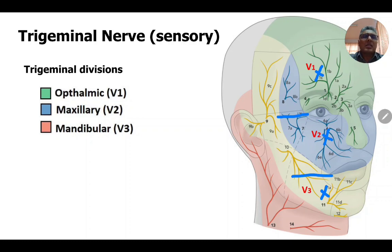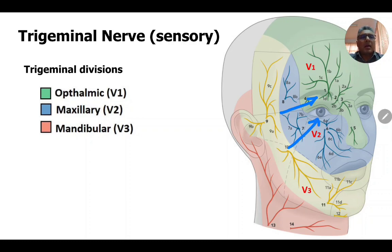By this way you can check all three divisions without remembering all the complicated lines. Another important point is that the upper eyelid is supplied by the ophthalmic division of the trigeminal nerve and the lower eyelid is supplied by the maxillary division. Inside the eye, when the eye is open, the cornea and the conjunctiva covering the sclera are also supplied by the ophthalmic division of the trigeminal nerve.